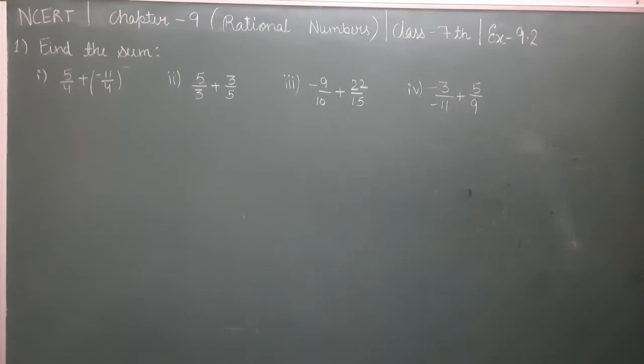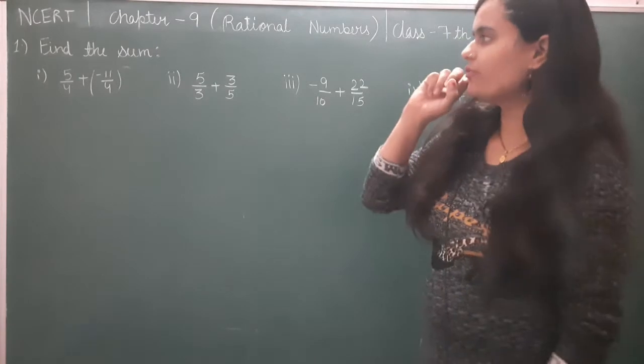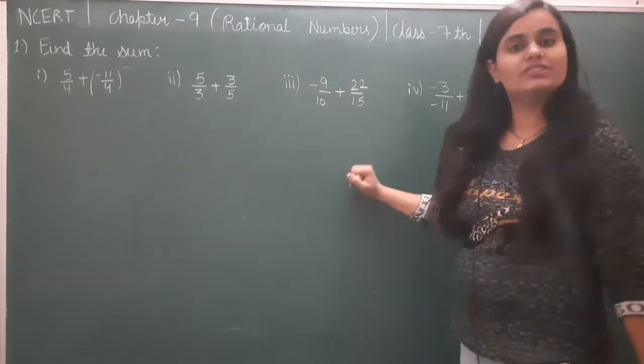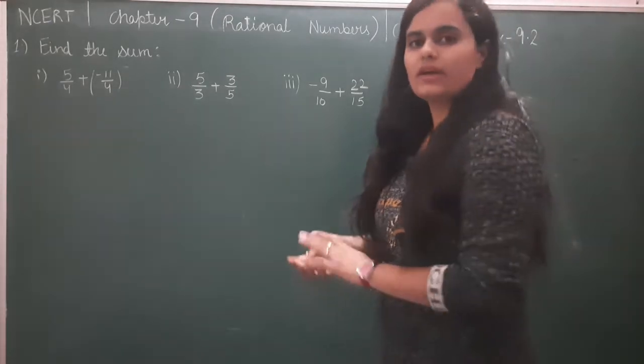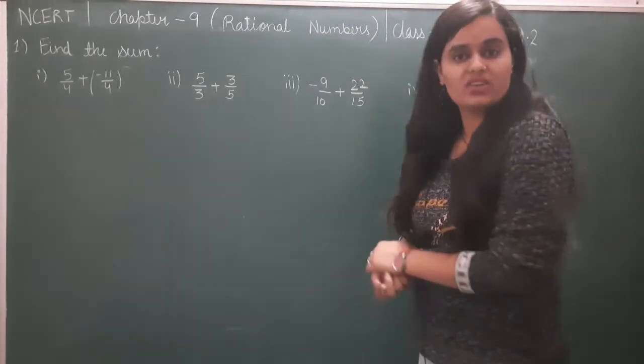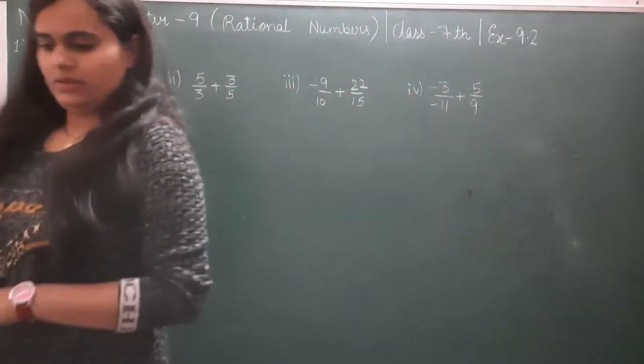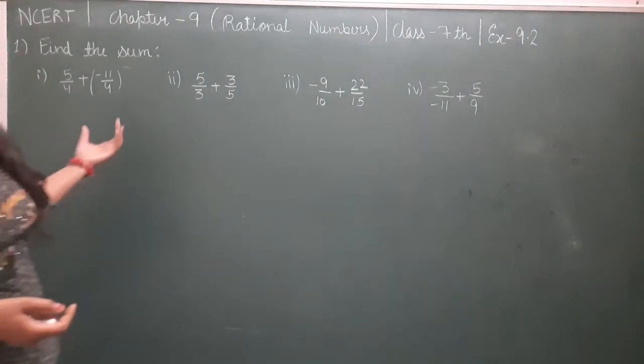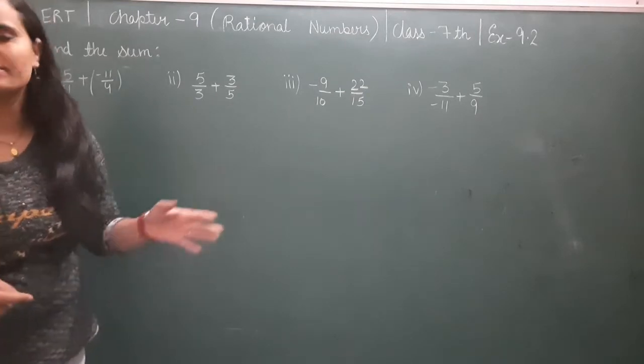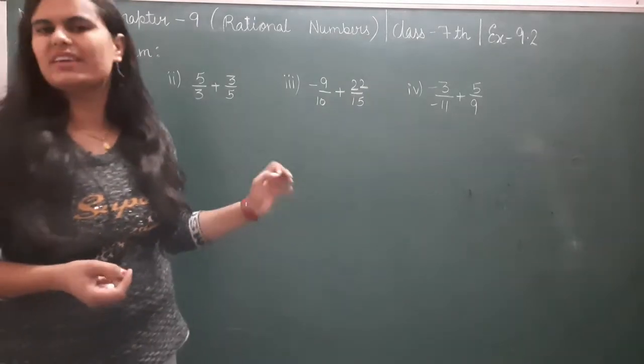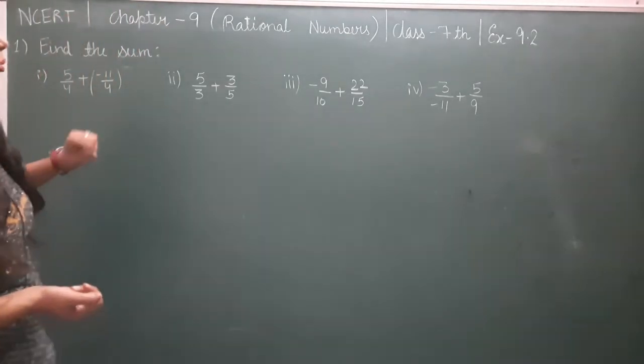Good morning students, let's start new Exercise 9.2. In the first question we have to find out the sum of two rational numbers. We've learned which is greater, which is smaller, subtraction, addition, product. In the next one we'll learn more. In this one we're focusing on addition and subtraction, additive inverse. Additive inverse is when positive becomes negative rational number, negative becomes positive, very easy.